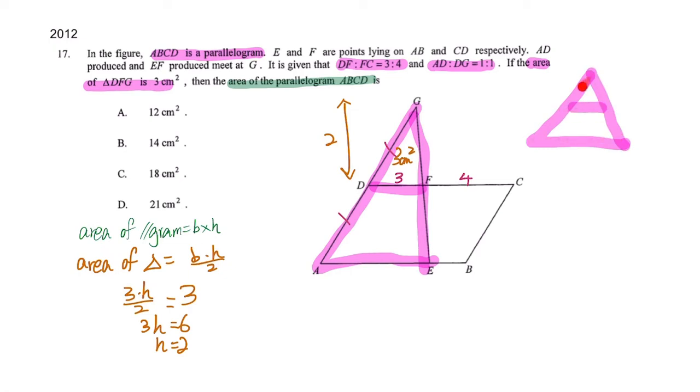It's a similar figure. Small triangle is similar to the big one, they have same angle sizes. So what's the usage of that? In similar figures, the area ratio is the side ratio squared.